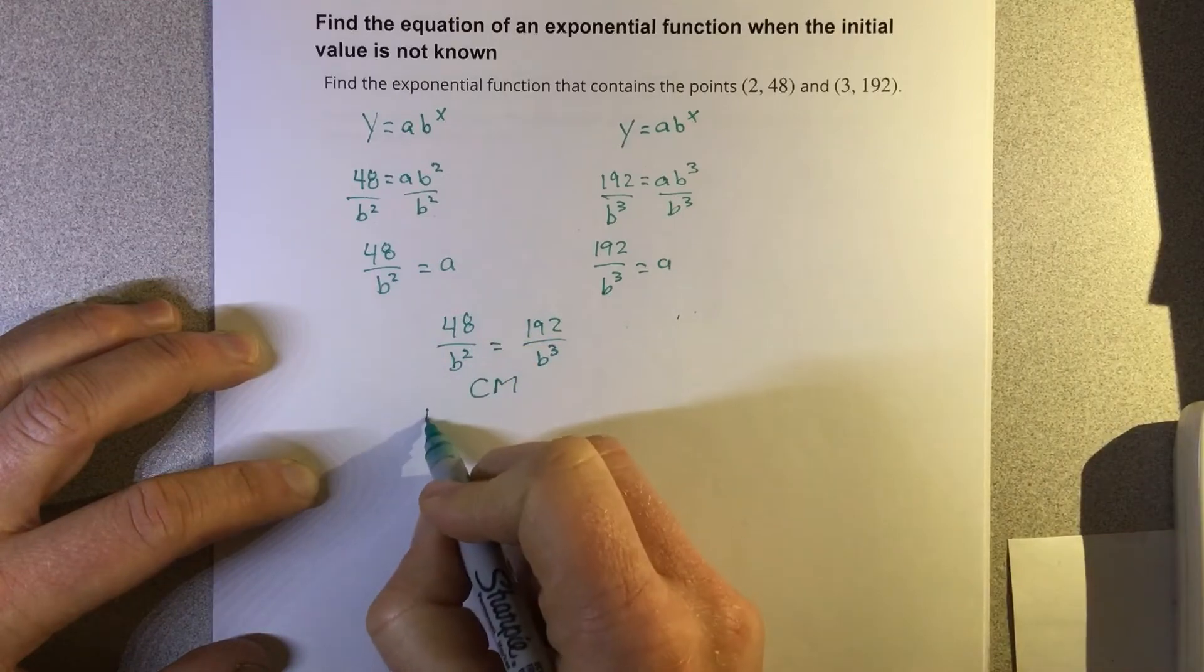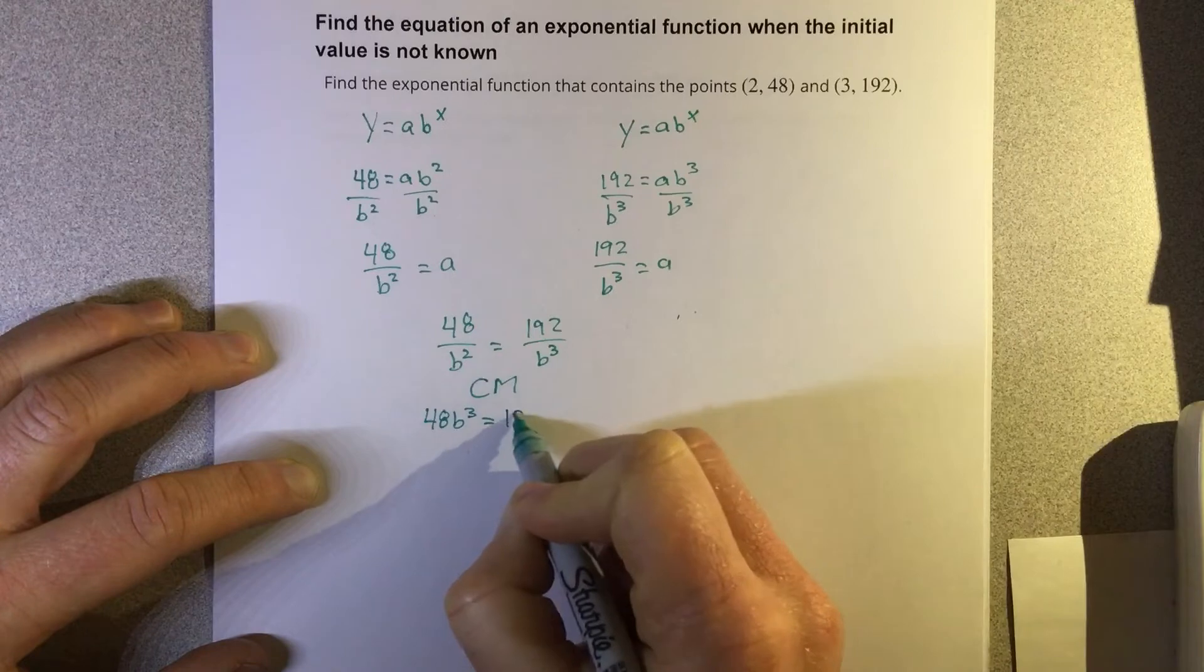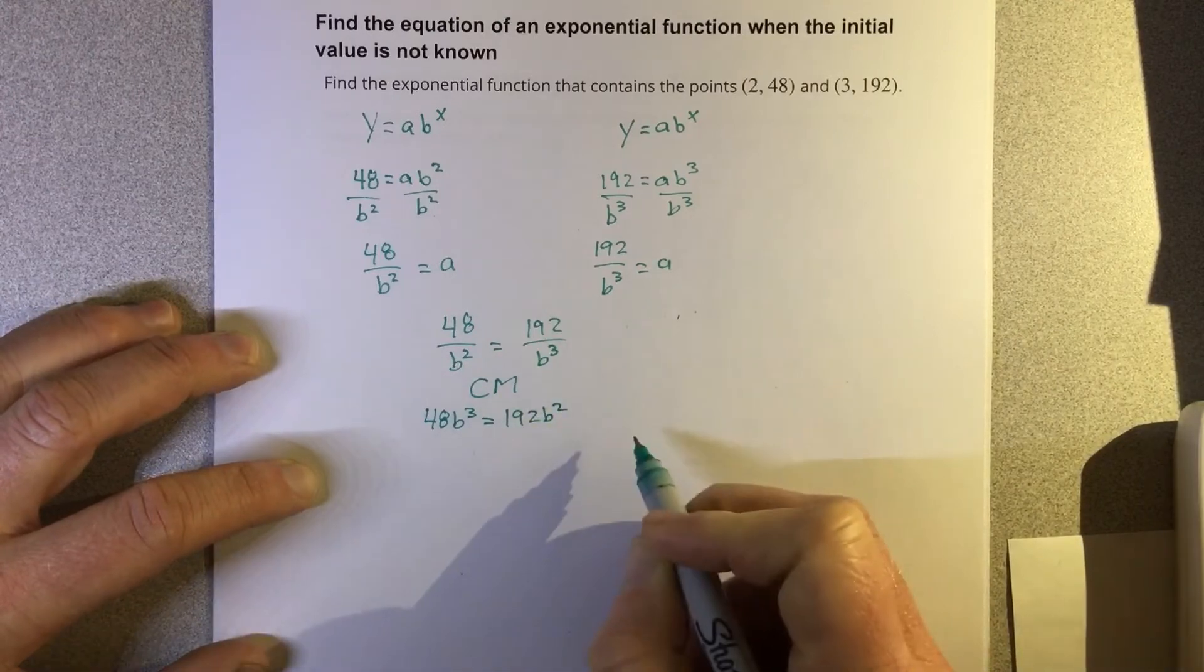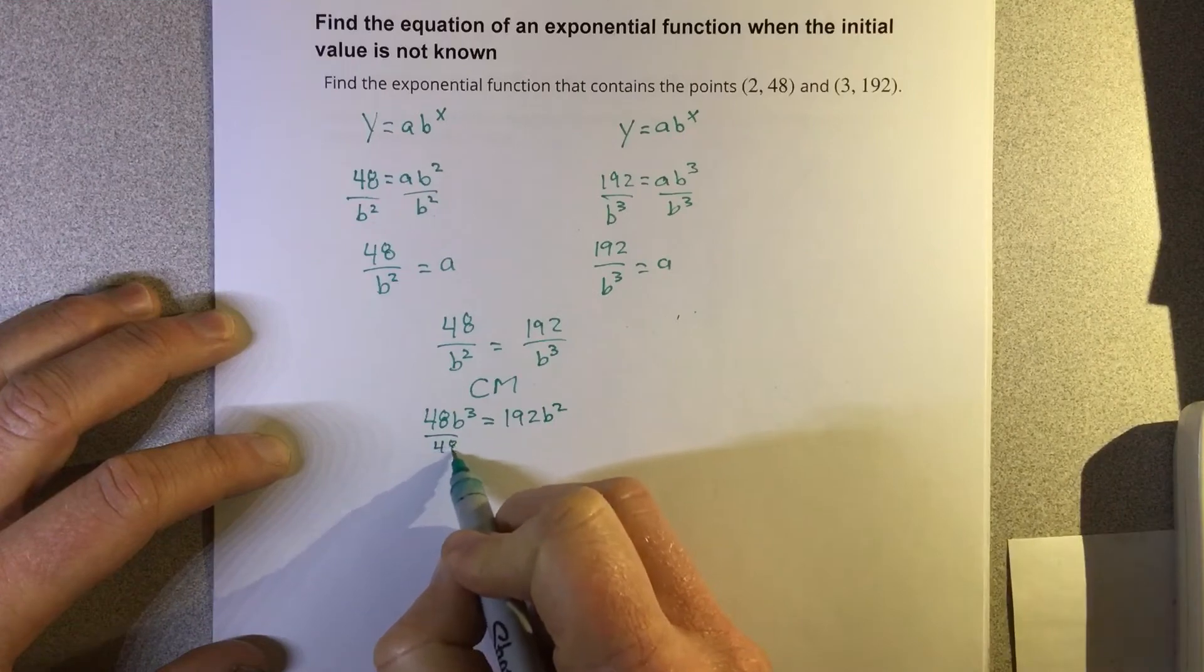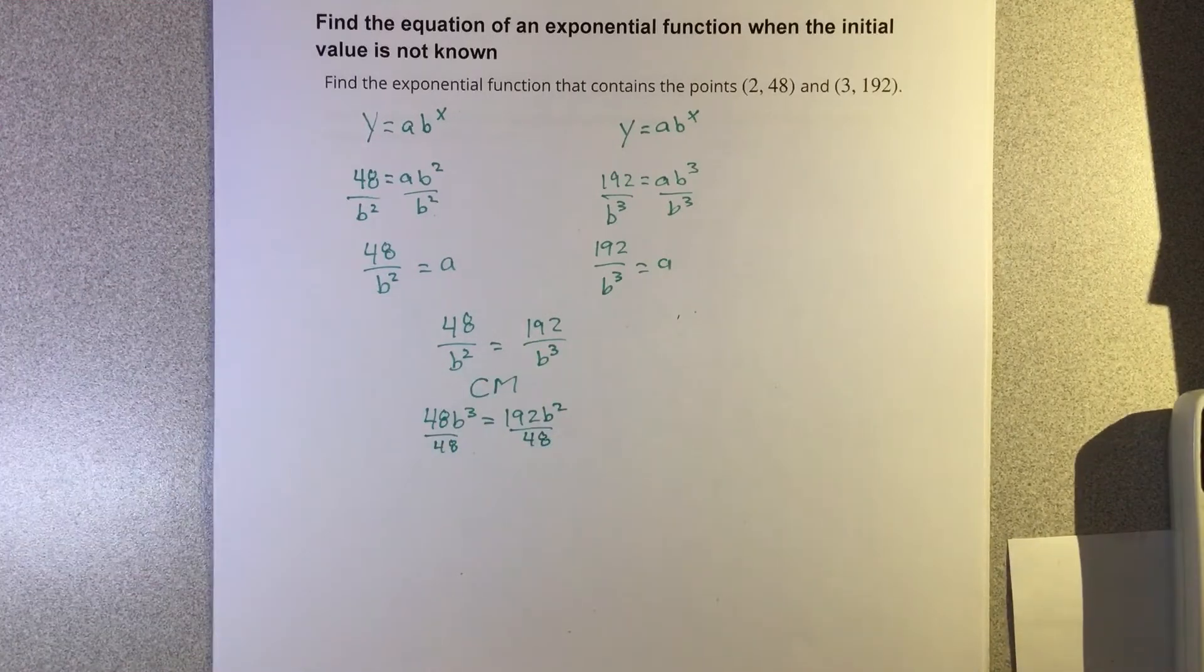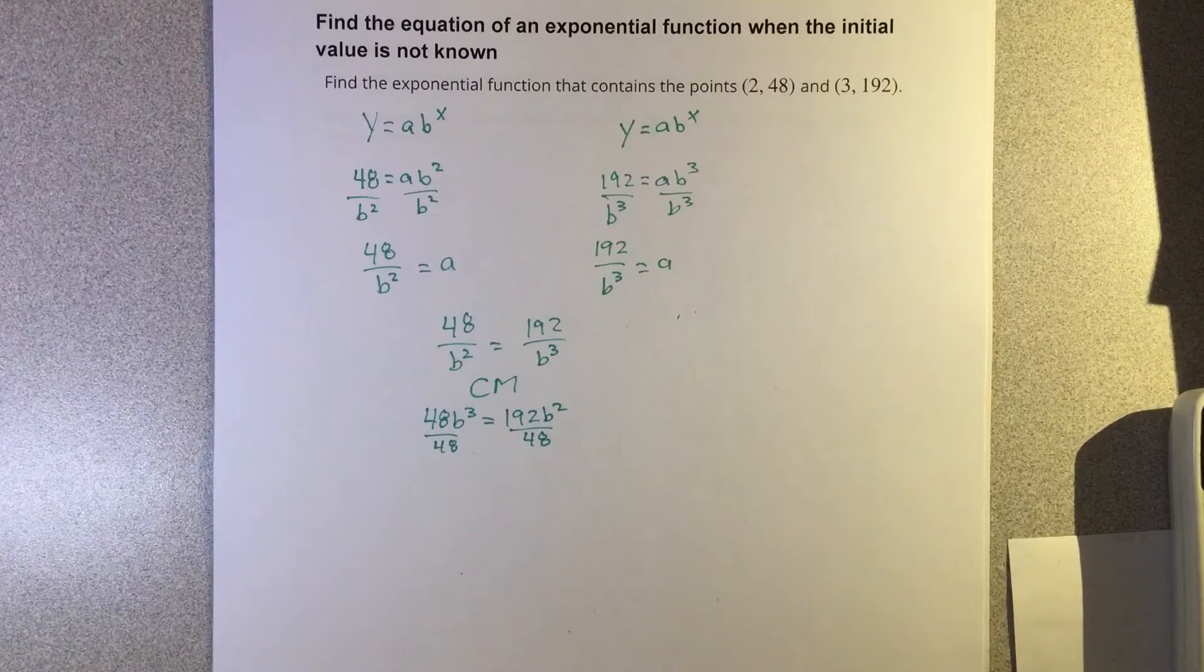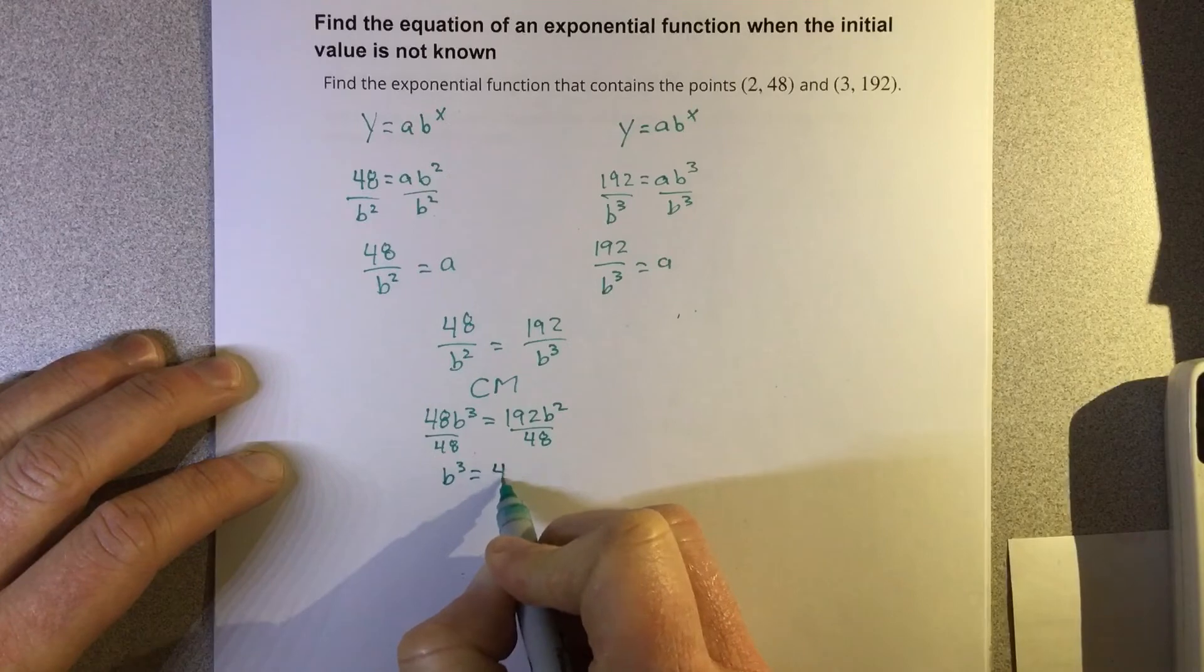b cubed times 48 is 48b cubed. b squared times 192 is 192b squared. We're going to divide each of these by 48, and we get b cubed equals 4b squared.